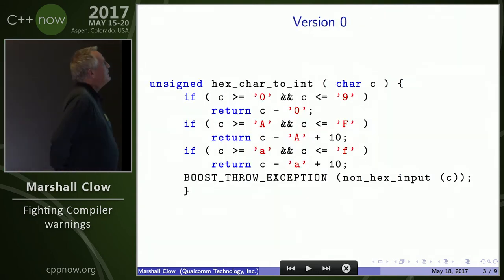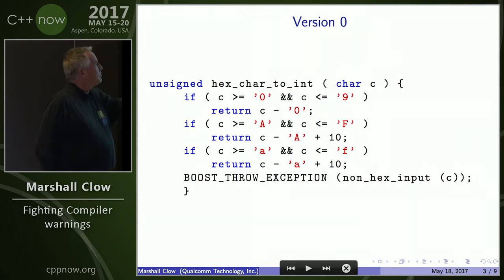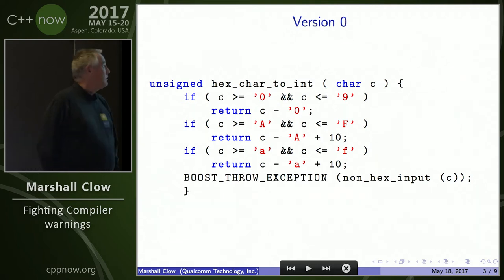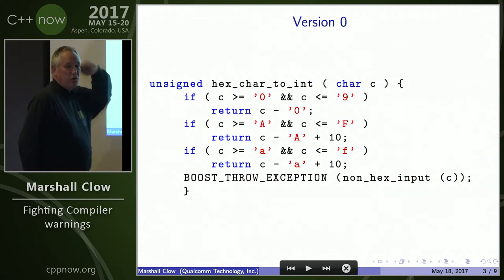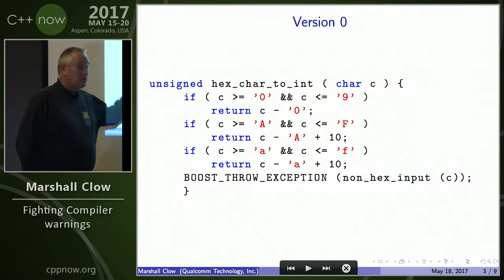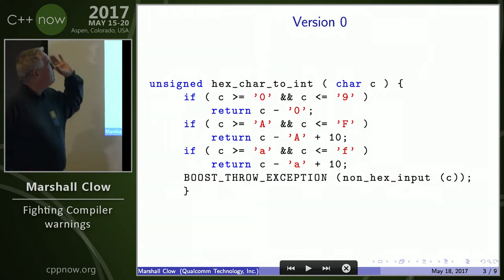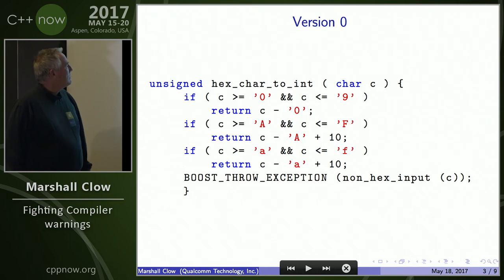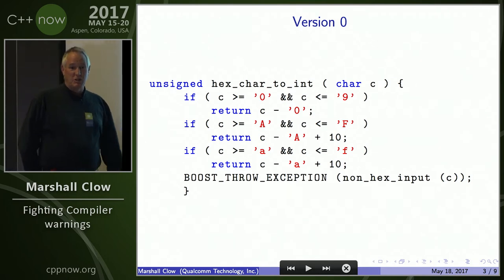This is what I wrote: hex_char_to_int. If it's 0 through 9, return 0 through 9. If it's A through F, return 10 through 15. If it's not A through F or 0 through 9, throw an exception. Simple. Easy. I wrote it, I compiled it — compiled the first time. I tested it, passed the test, first time. Real simple algorithm. The slide software I use substituted the single quotes with fancy quotes, but ignore that.